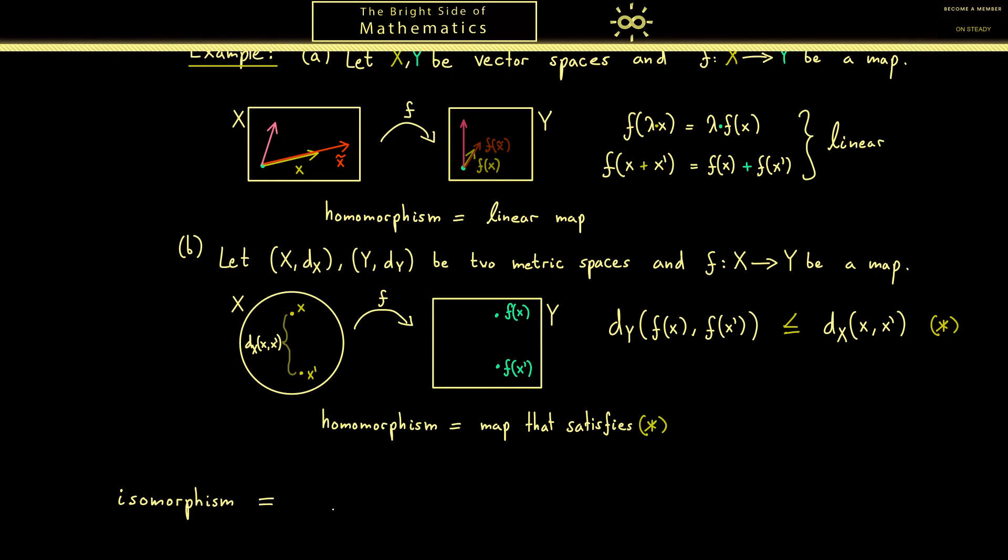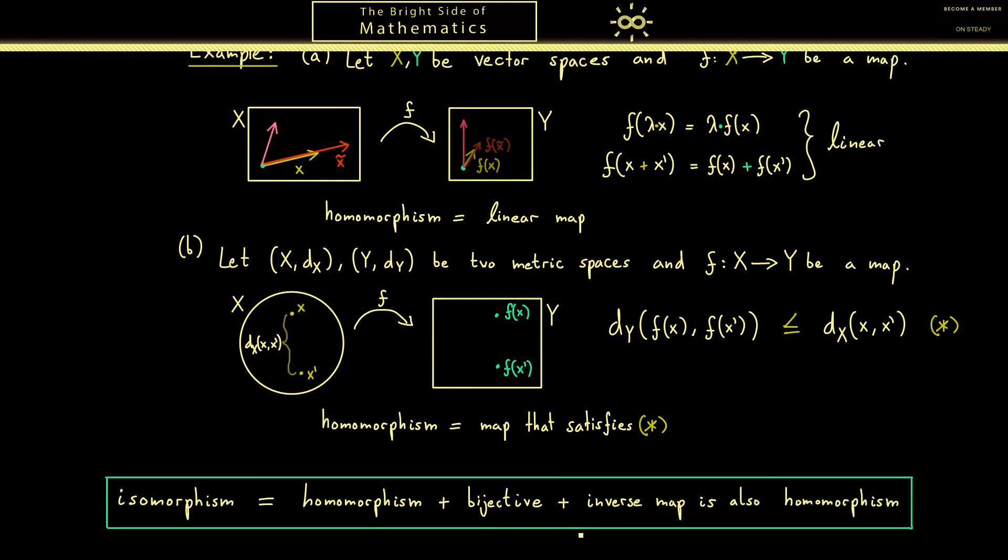You might already guess an isomorphism is just a special homomorphism. What we want in addition now is that we can also read it from the right hand side to the left hand side. In other words the map has to be bijective. But then in this case it's only natural to demand that the inverse function from right to left also preserves the structure. This means that the inverse map is also a homomorphism. And with this we have the whole definition of an isomorphism. Please always remember this.